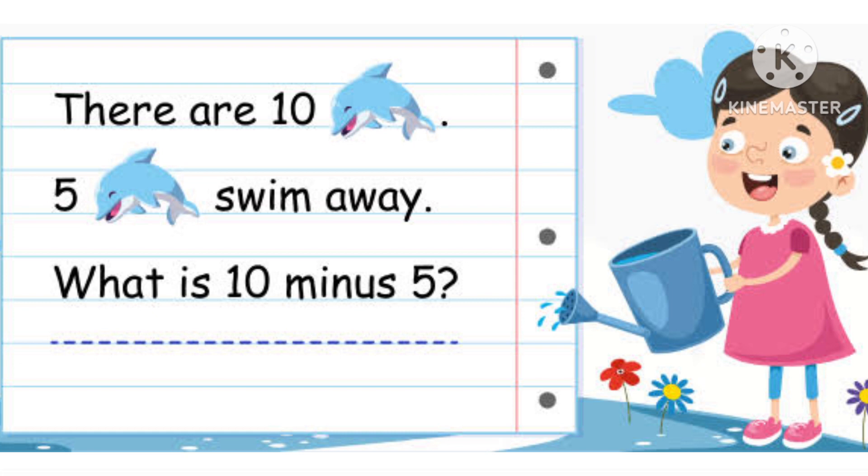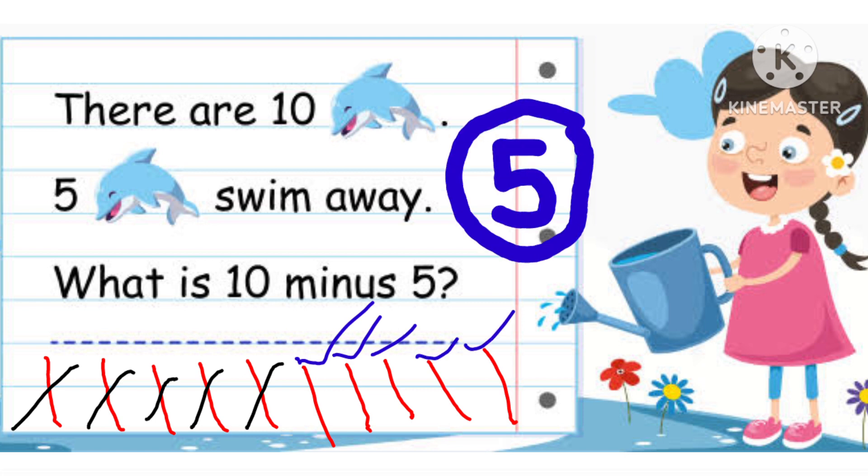There are 10 dolphins and 5 dolphins swim away. What is 10 minus 5? We will draw 10 lines, one by one, and then cut 5 lines. So how many lines are left? 5. So 10 minus 5 will be 5. The answer is 5 dolphins are left.